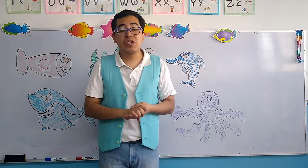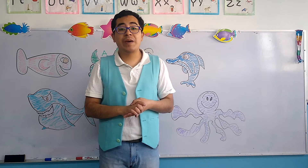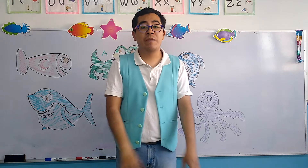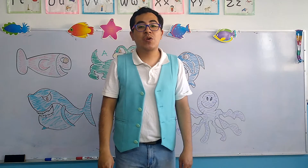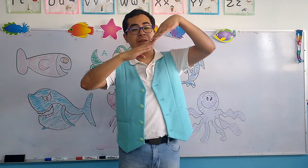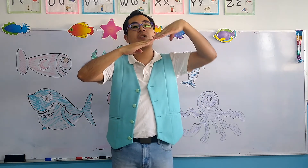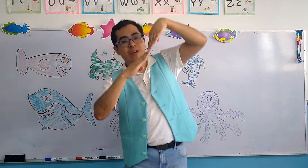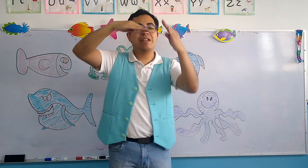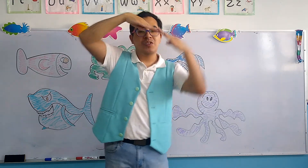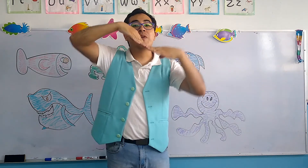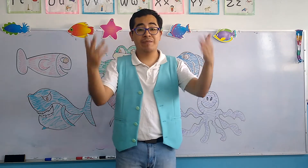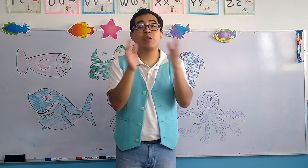And finally, we have the seesaw. The seesaw is an activity that requires two people. With the impulse of your legs, you have to gain weight so you can go up, and the other person obviously goes down, and then the other person uses their legs to go up. So it's basically a game that requires the strength of the legs — and it's not just to have fun, but also to do exercise.